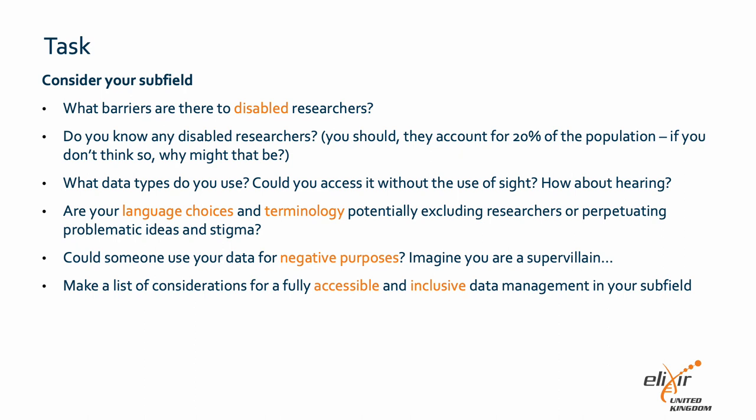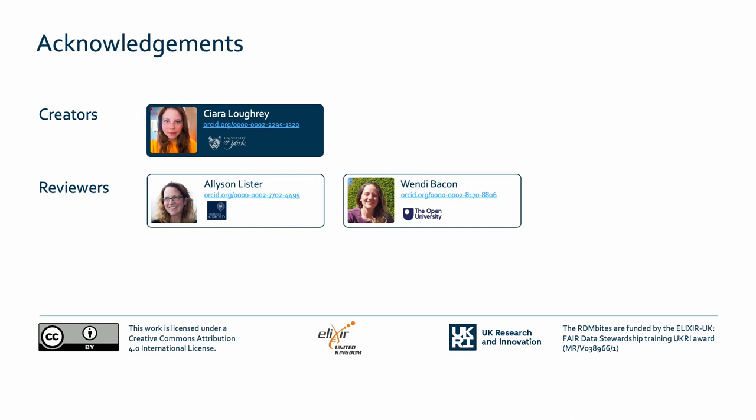We will finish with a brief task. Consider your own subfield of research: what barriers are there for disabled researchers when working with your data? Do you know any disabled researchers working in your field? Around 20% of the population are disabled, so if you don't think you know any, consider whether they might not be open about this and if so why, or whether your field is simply inaccessible for some other reason. Think about your data — could you access it with sight or hearing impairments? Do your language choices around medical conditions perpetuate ideas that some might see as damaging or stigmatising? If you were a supervillain, could you think of a way to use your data in a harmful way? Try to make a list of the key considerations for your data which would make it accessible and inclusive to disabled people. That's the end of this video. Follow-up videos on these topics are available as RDM Bytes if you'd like to learn more.